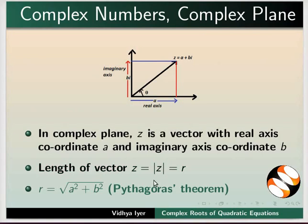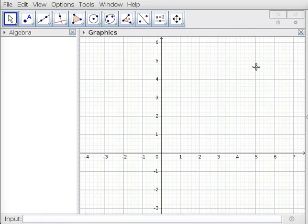According to Pythagoras theorem, r is equal to square root of a squared plus b squared. I have already opened GeoGebra interface.